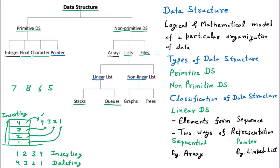You can see: 1, 2, 3, 4 going in and 4, 3, 2, 1 coming out — that is reversed. The last book which was placed is coming first. That's why it is called LIFO. So stack is the LIFO data structure, meaning last in first out.